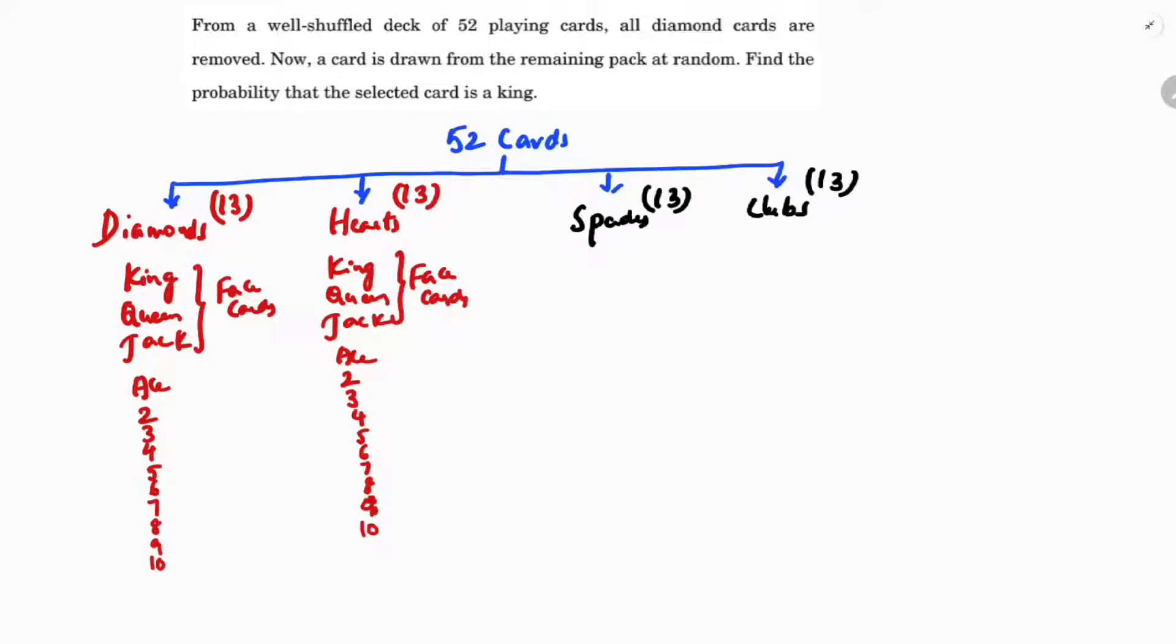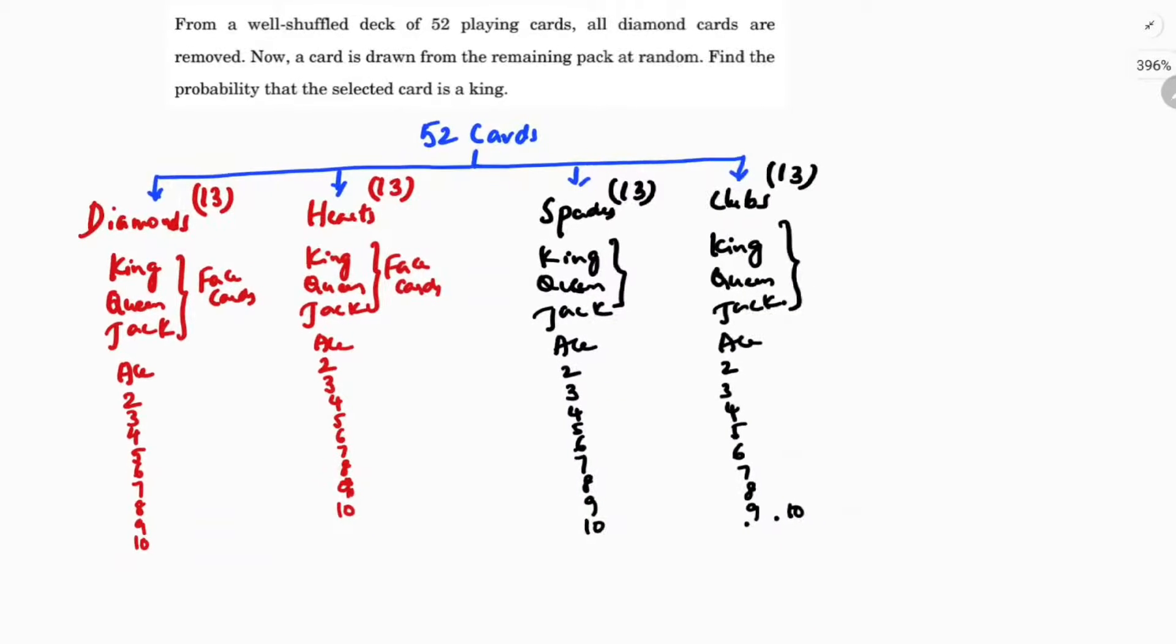In the same way, in the black suits also same: king, queen, jack - these are face cards, then ace, 2, 3, 4, 5, 6, 7, 8, 9, 10. And here also the same thing: king, queen, jack - these three are face cards again, so ace, 2, 3, 4, 5, 6, 7, 8, 9, 10.